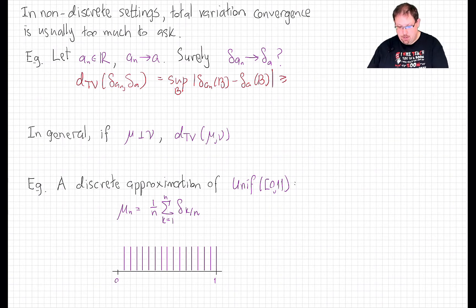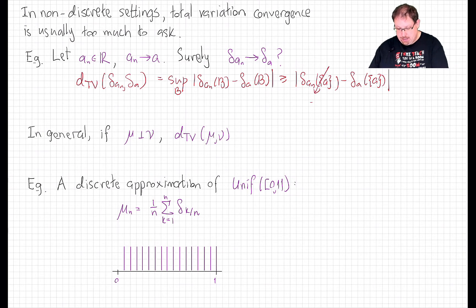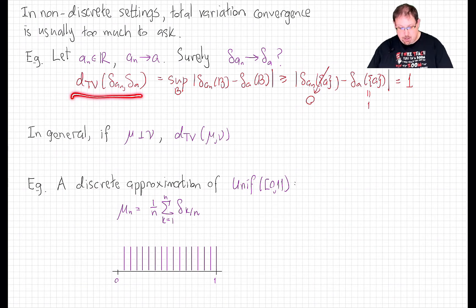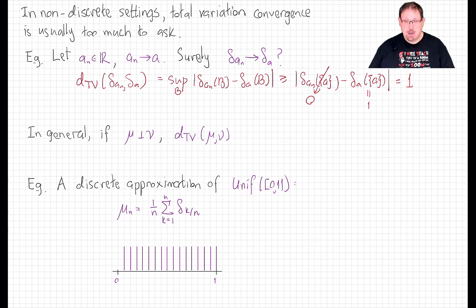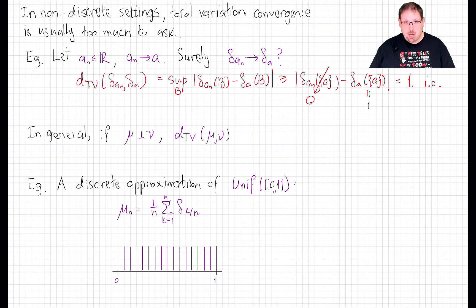That's certainly bounded below by taking B equal to the singleton set {a}. Here's the rub: this term is equal to 0 unless a_n is actually equal to a. So we get that this is 0 while this is constantly 1. This distance is bounded below by 1 for arbitrarily large n unless a_n happens to be eventually constantly equal to a. So unless we want convergence of sequences to just mean eventually constant, total variation distance does not coincide with our notion of convergence of real numbers. That's a bummer.